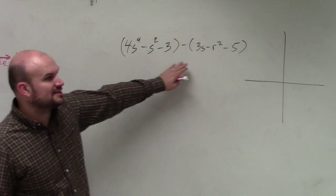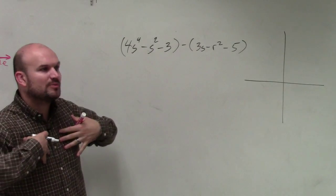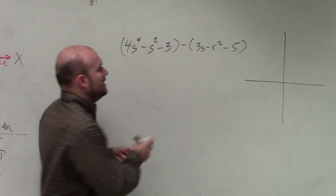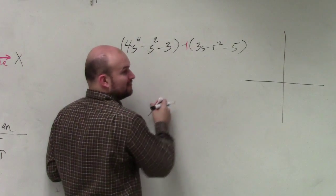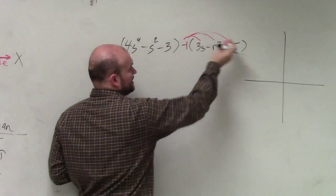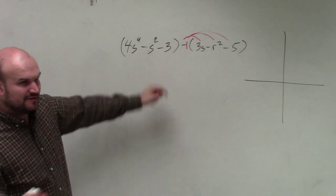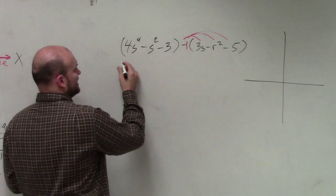So anyways, when you guys are subtracting, you could easily subtract these. My personal preference is rather than subtracting them, I would like to just treat this as like a negative 1 and distribute it. It just makes it a little bit easier. And then I can get rid of my parentheses once I distribute that through.